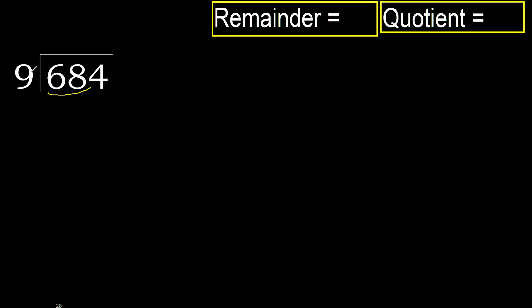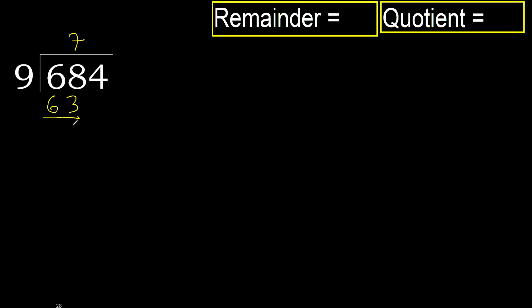Therefore, work with 68. 9 multiplied by which number is nearest to 68 but not greater. 9 multiplied by 8 is 72, which is greater. Multiply by 7: 63 is not greater. Ok. Subtract: 68 minus 63 is 5.